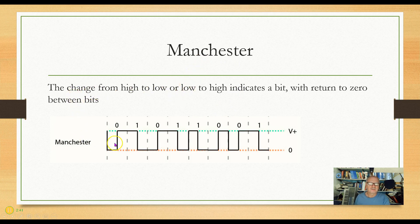Manchester encoding is a little bit different. Rather than high being 1 and low being 0, or vice versa, what we have is the change representing 0 or 1. So if I change from high to low, that represents 1, and then when I change from low to high, that represents 0.